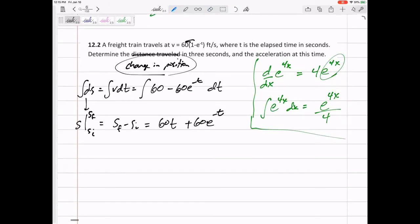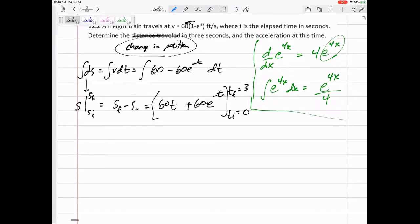All right. But I can either put plus c or I can make this a definite integral on both sides, t initial to t final. All right. So, I'm going from 0 to 3. I'm trying to find the change of position, which is what I've got on the left-hand side. I've got change of position on the right-hand side. I like to do these as definite integrals. So, let me plug in 3: 60 times 3.